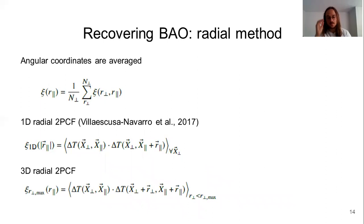And the second method that we have considered in order to recover BAO is a radial one, in which now the main idea is to average the angular coordinates. The resulting correlation function can be seen as a complementary of the projected correlation function WP. Nevertheless, keeping this idea in mind, we have used several estimators. The one-dimensional radial function proposed in the past by Villaescusa-Navarro, and a three-dimensional radial function, in which we have considered different angular cuts.